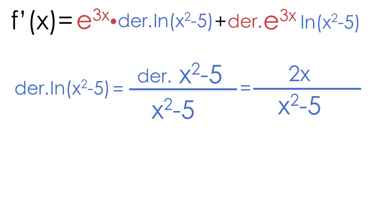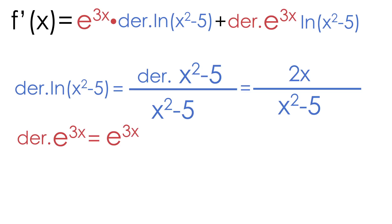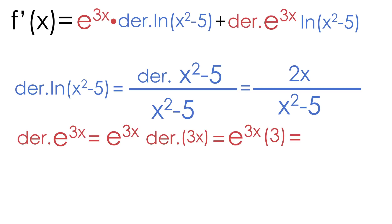Now let's move over to the right and simplify the derivative of E to the 3x. If you're not familiar with taking the derivative of E functions, the idea is also really simple. The derivative of any E function is just itself multiplied by the derivative of the exponent. So the derivative of E to the 3x is just equal to E to the 3x multiplied by the derivative of the exponent 3x. The derivative of 3x is just equal to 3, so the derivative of E to the 3x is just equal to 3 times E to the 3x.